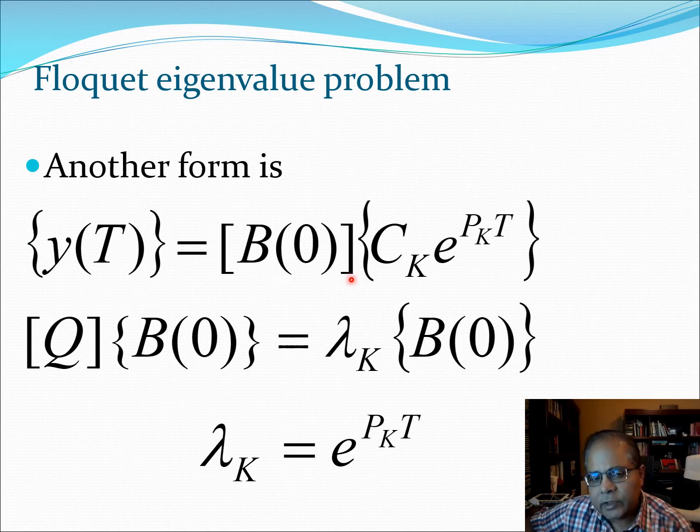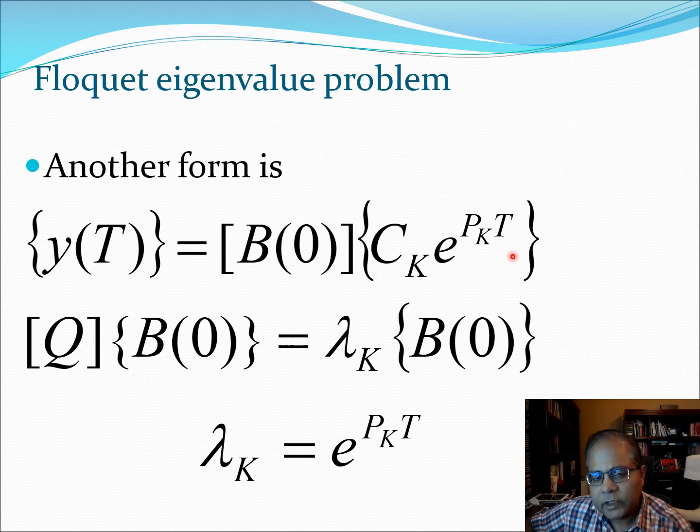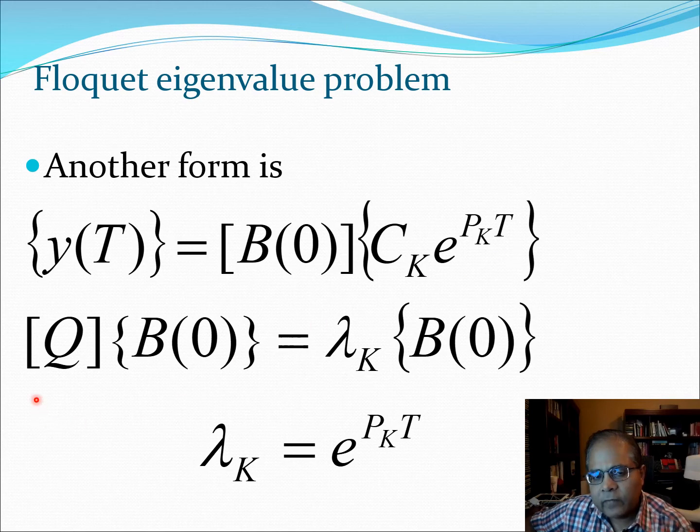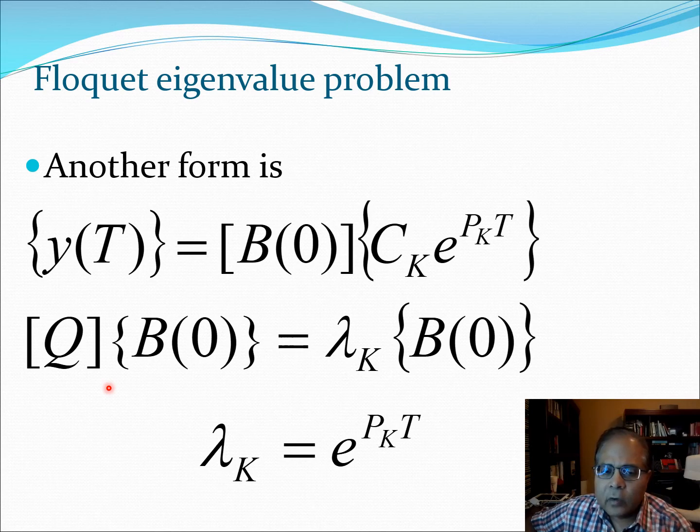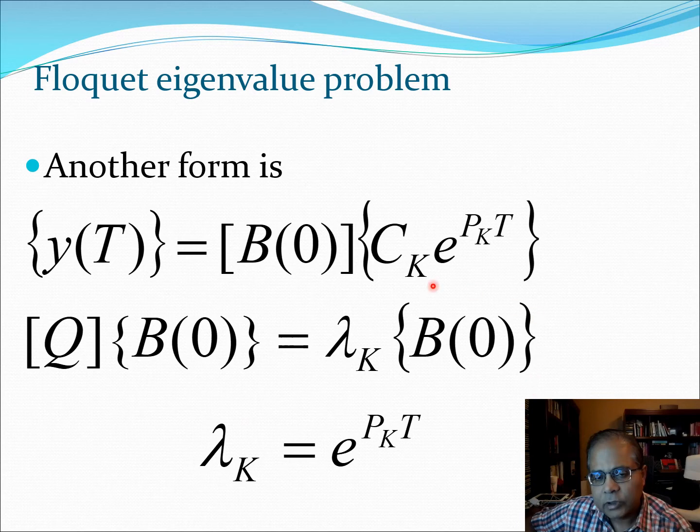Now, I can also write Y(T) as B zero C_K e^(P_K T), which we showed previously in a slide sometime before. So therefore, I can equate these two Y(T)s and I can get this particular form: Q B zero equals Lambda_K B zero. And now you can clearly see here that this is an eigenvalue problem and essentially you need to find the eigenvalues of this transition matrix Q. Now, essentially what we have done is we have replaced this term e^(P_K T) by Lambda_K to get this solution. So when you solve this problem for Lambda_K, you get Lambda_K and then you know that Lambda_K is equal to e to the power P_K T. So you need to extract P_K from this equation.